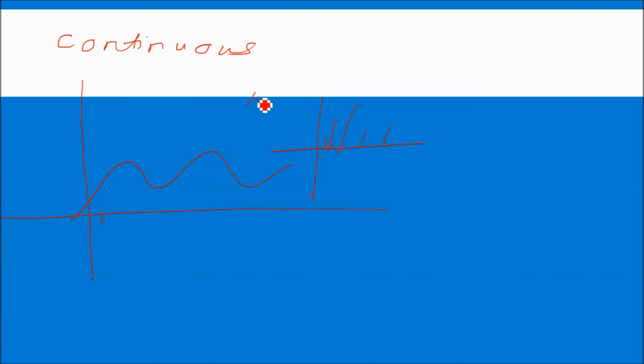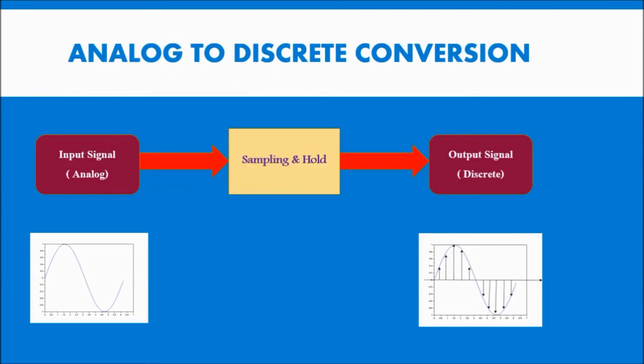That is called as discrete signals. Now, you can convert analog into discrete conversion. You have to take input, analog input. This is the analog input you have. Everywhere the signal having the values that is given to sample and hold circuit which will sample the signal at particular interval and it will hold for some amount of time.